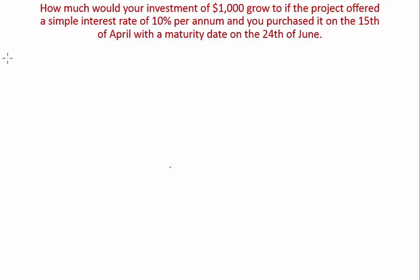First thing you want to do is put down all the variables you have. So your principal is $1,000. Your simple interest rate is 10% per annum and your time is not given. It's given with two dates.